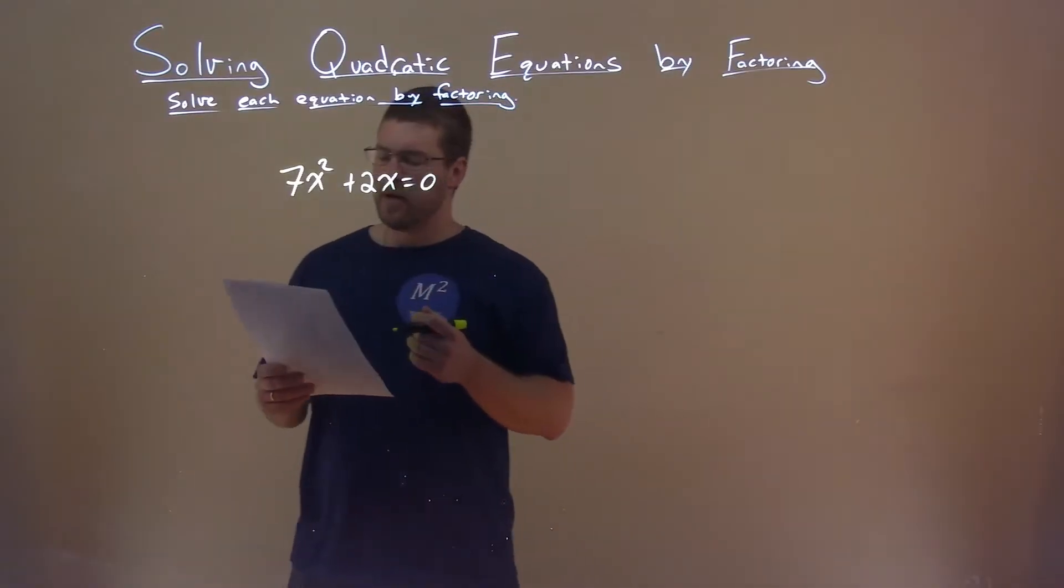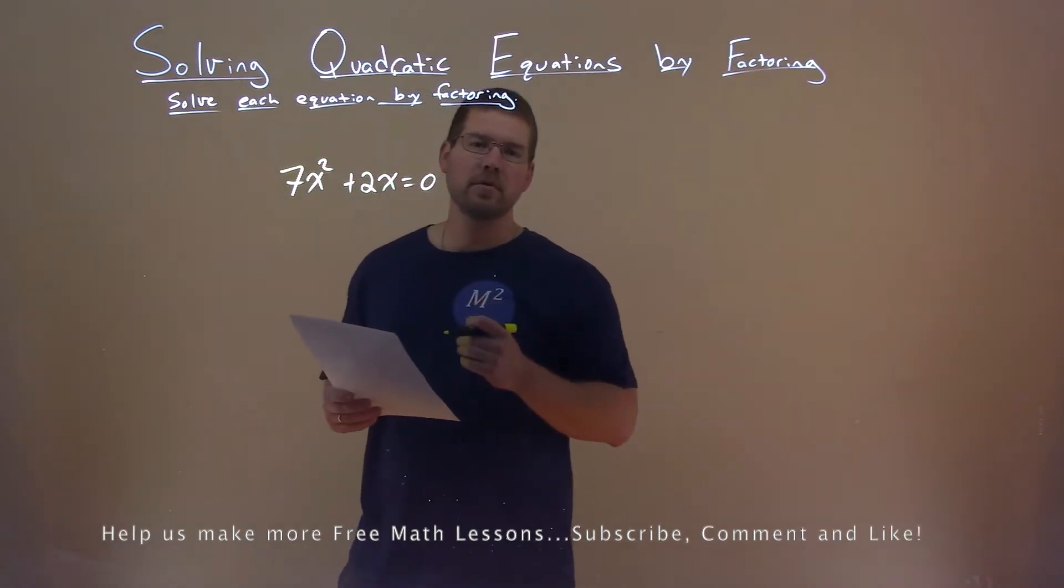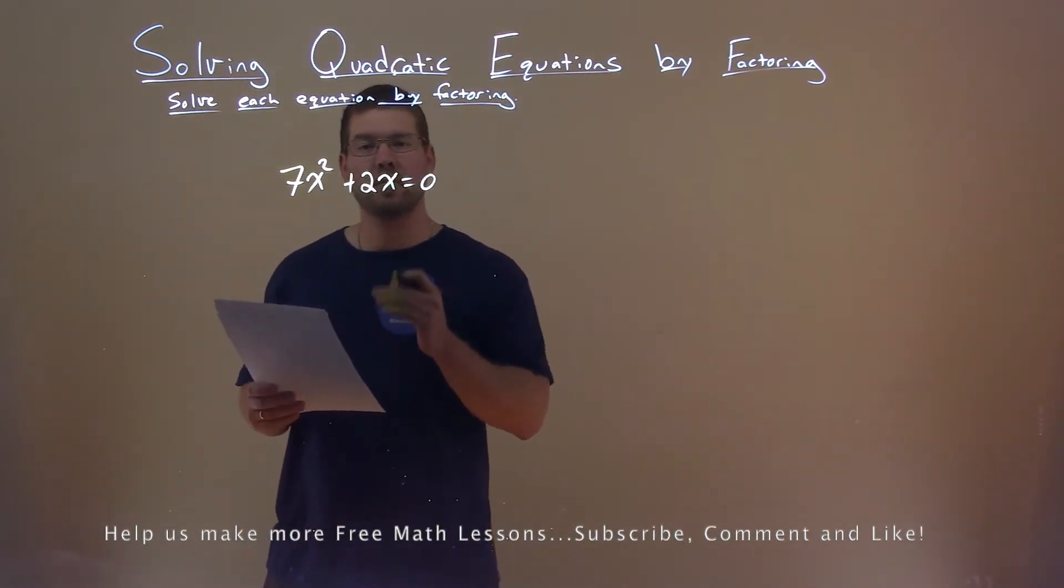We're given this problem right here. 7x squared plus 2x equals 0, and we want to solve this equation by factoring.